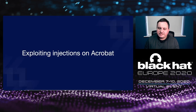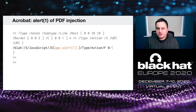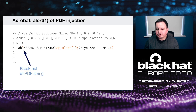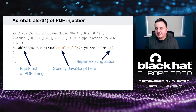Now let's talk about exploiting injections on Acrobat. This is the alert(1) of PDF injection. First we break out of the PDF string using the closing parenthesis. We use the JS dictionary to define our JavaScript — in this case, app.alert(1). We repair the existing action using an opening parenthesis. This will create an alert box to prove our injection worked. I used this style across many different injections to prove the injection worked, then built up and improved on it.